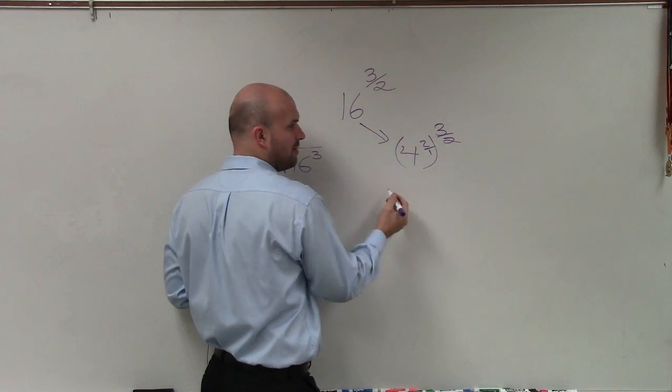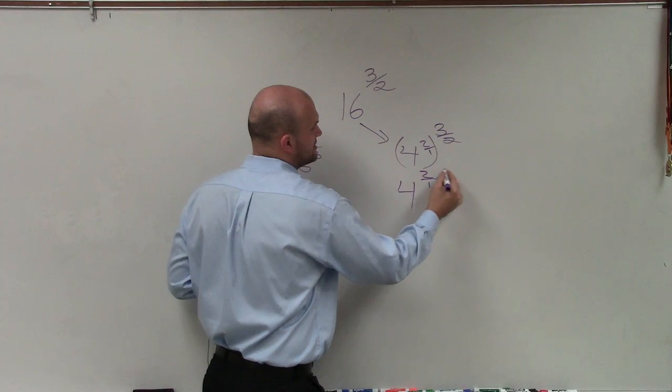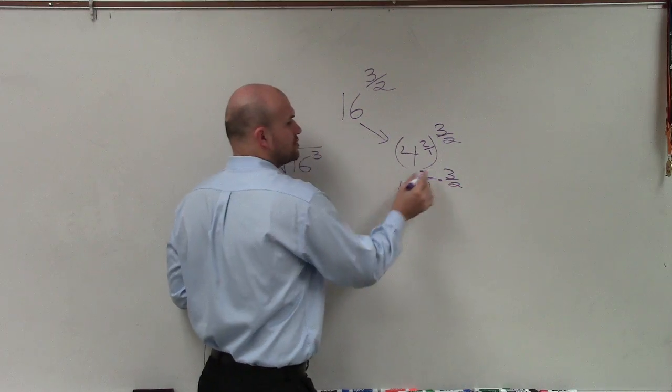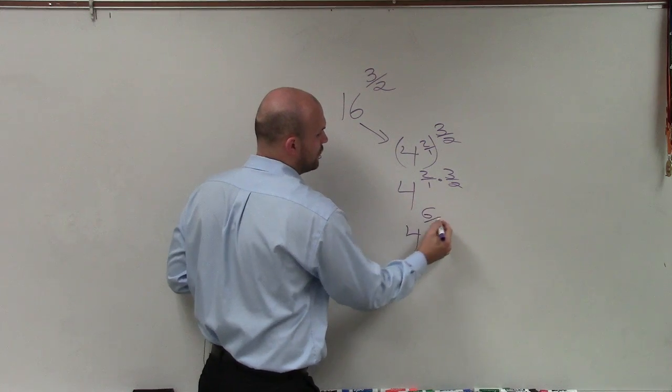Now remember, 2 is really 2 over 1. So by using the properties of exponents, I'm really doing 2 over 1 times 3 halves. 2 times 3 is 6 over 2.